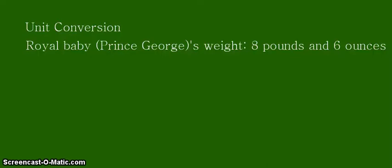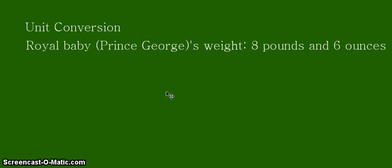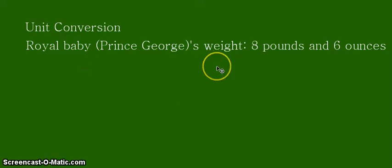Hello and welcome to another video tutorial on unit conversion. In this example we will be using a very familiar weight — the weight of the newly born royal baby, Prince George. Prince George was born weighing 8 pounds and 6 ounces. We will try to convert 8 pounds and 6 ounces into another common unit of mass, which is kilograms. We always start with our conversion factors.